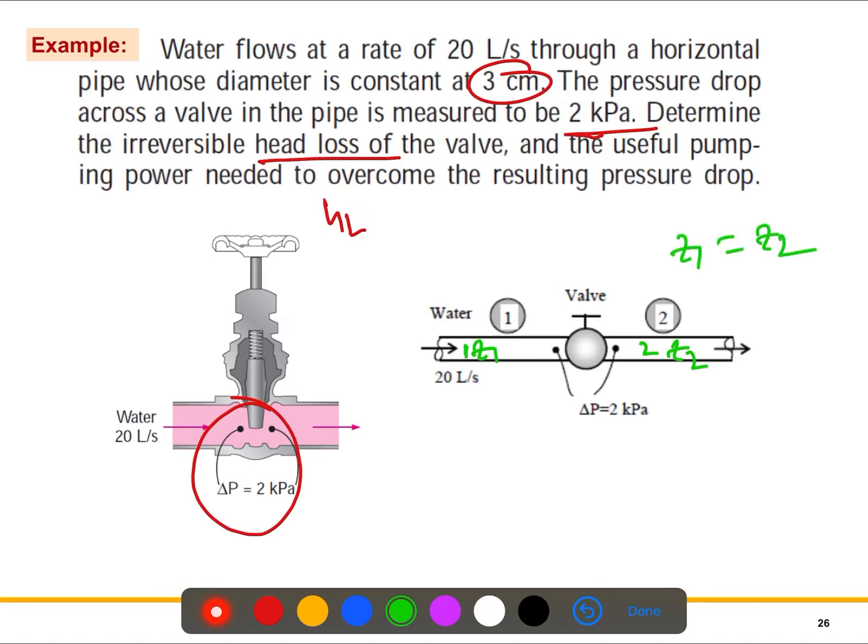And here the inlet and the exit diameter is the same, so similarly we can say v1 and v2 are the same. So no change of the velocity and elevations.